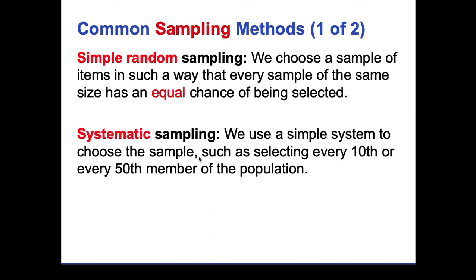A much more common method in complex research is systematic sampling. This is like going through TSA at the airport — to avoid discrimination, they decide in the morning to search every 10th or every 50th person who comes through the doors or wants to board the airplane, making the process more systematic and unbiased. If they decide to search every 10th or 50th person in line, they go ahead and do so.